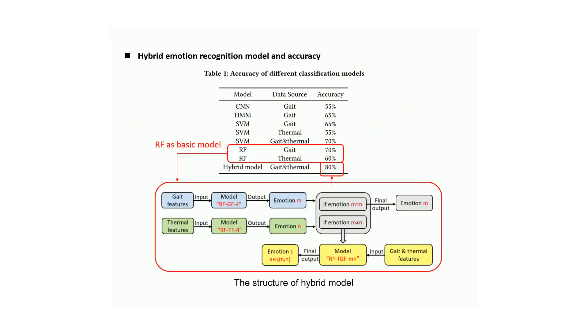We test the unimodal classifier with CNN, HMM, SVM, and RF on our database. We found that RF has the highest accuracy, so we select RF as the basic model for the hybrid model.